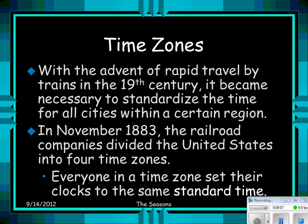Time zones. With the advent of rapid travel by trains in the 19th century, it became necessary to standardize time for all cities within a certain region. In November 1883, the railroad companies divided the United States into four time zones, and everyone in a time zone set their clocks to the same standard time.